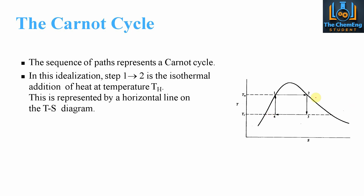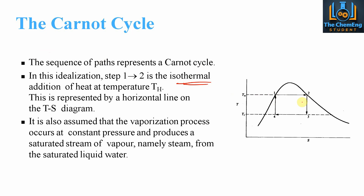From stages one to two, we have the isothermal addition of heat at temperature Th. This is represented by a horizontal line — constant temperature — so we are increasing the entropy, not the temperature. It is also assumed that the vaporization process occurs at constant pressure and produces saturated steam, namely steam from saturated liquid water.